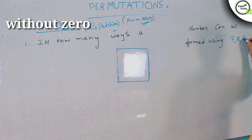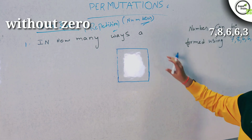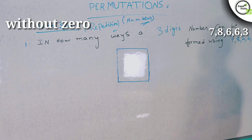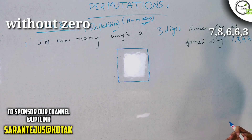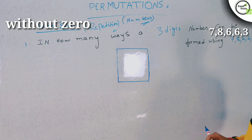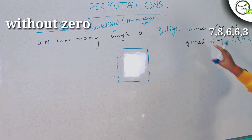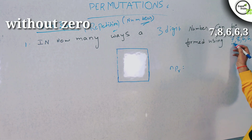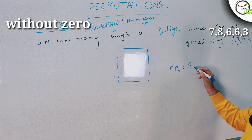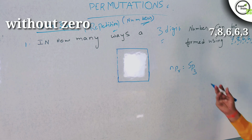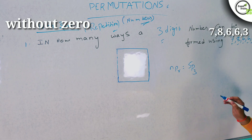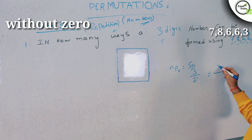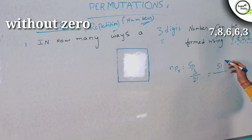Now an interesting question in the repetition model: in how many ways can a 3-digit number be formed using 7, 8, 6, 6, 3? We have 5 digits — 1, 2, 3, 4, 5 — and we are forming a 3-digit number. Again, the digit 6 appears twice. So we apply NPR divided by the factorial of the repeated count. That is 5P3 divided by 2 factorial. This equals 5 factorial divided by (5 minus 3) factorial, which is 5 factorial divided by 2 factorial divided by 2 factorial.